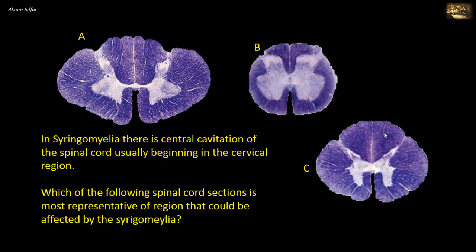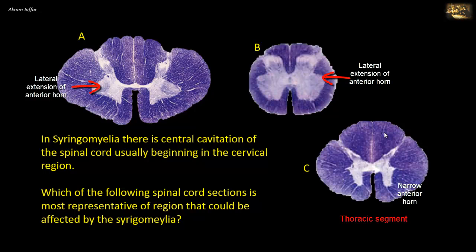For identifying spinal cord sections, the following rules should be remembered. First, the greatest amount of gray matter is largest in spinal segments of the cervical and lumbosacral enlargement, and this is clearly visible in A and B, because limb innervation necessitates a lateral extension of anterior horn cells.